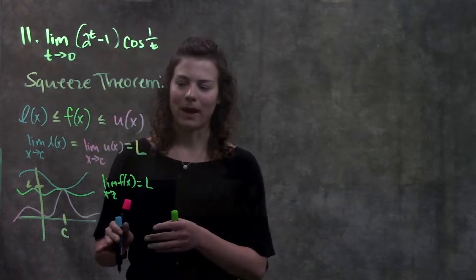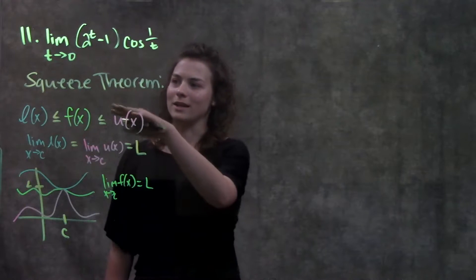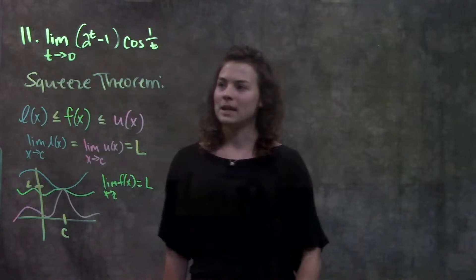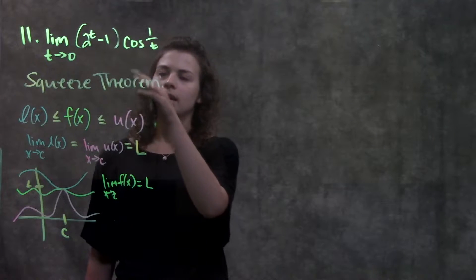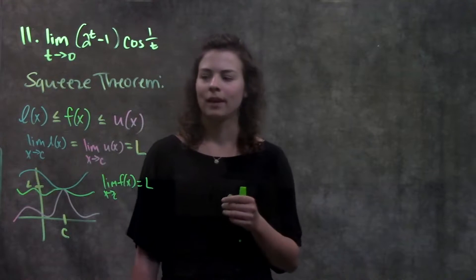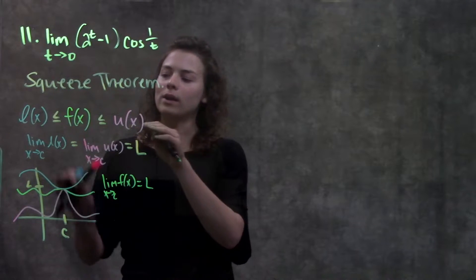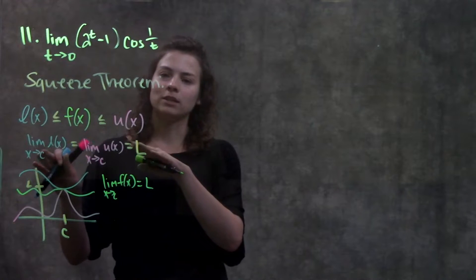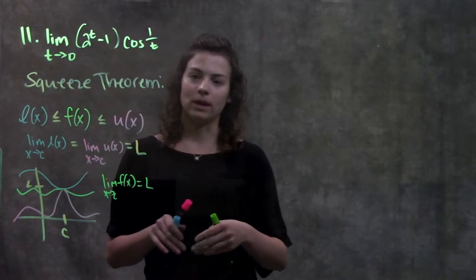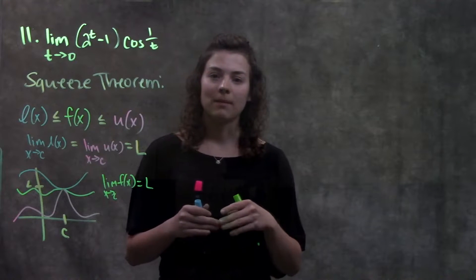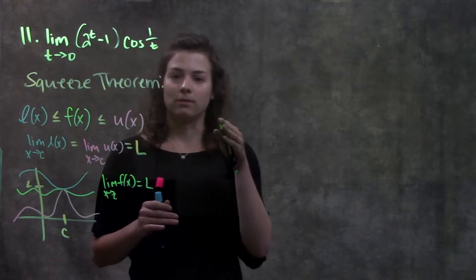Now let's go through this problem. It's a limit as t approaches zero of two to the t minus one times cosine one over t. The only difference from the theorem setup is that we don't have two functions given to us that this thing is bound between — so that's what we need to figure out.